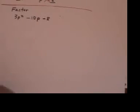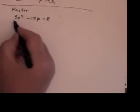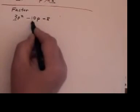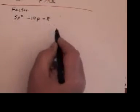This is a hard trinomial. I know it's a hard trinomial because 3 goes into here, but it doesn't go into there and it doesn't go into there.